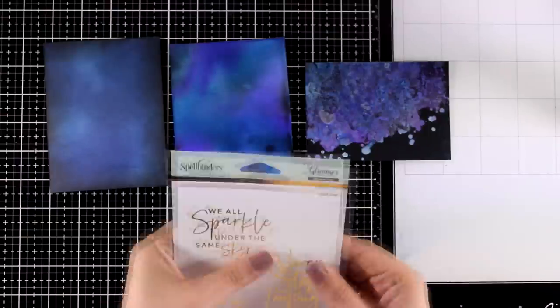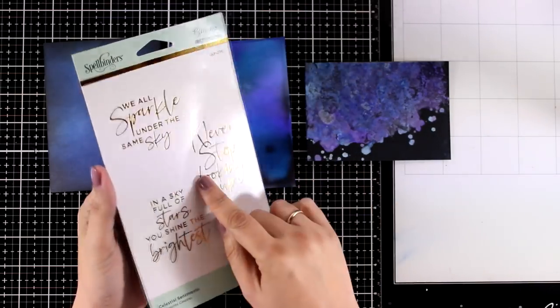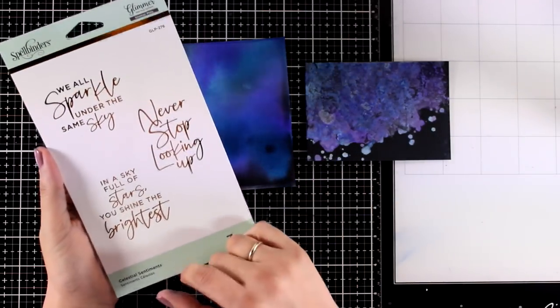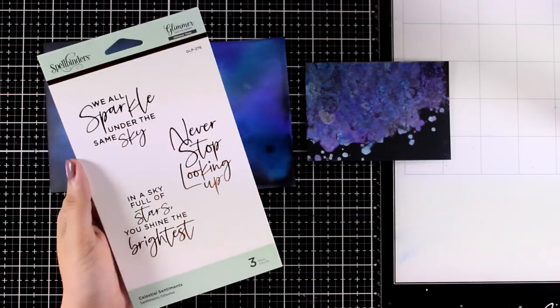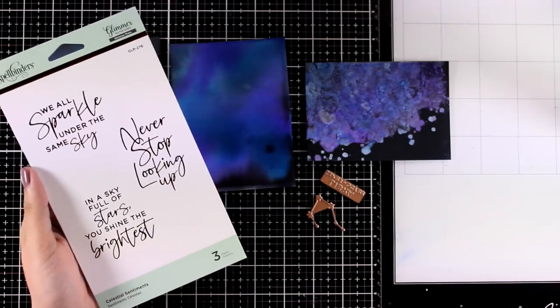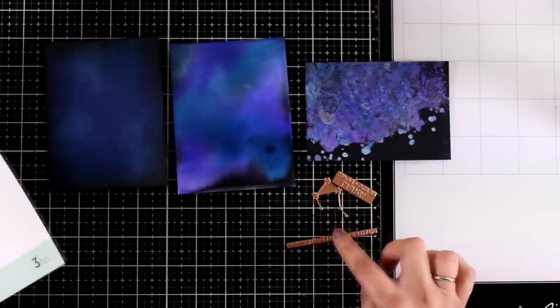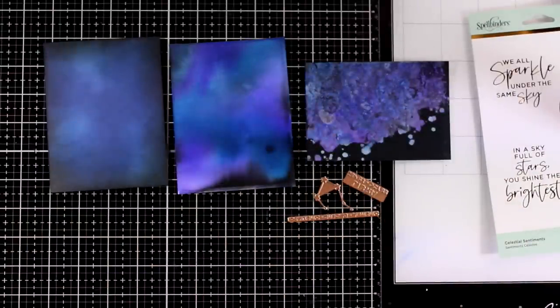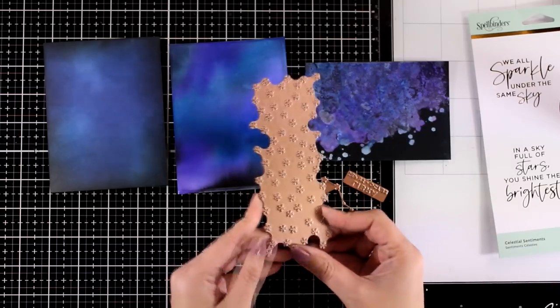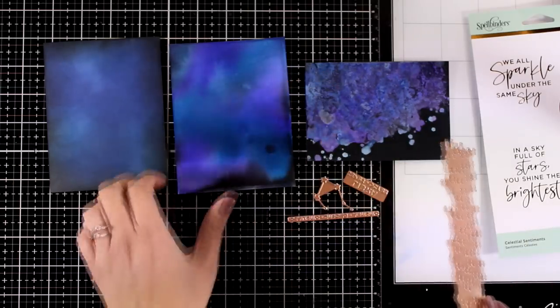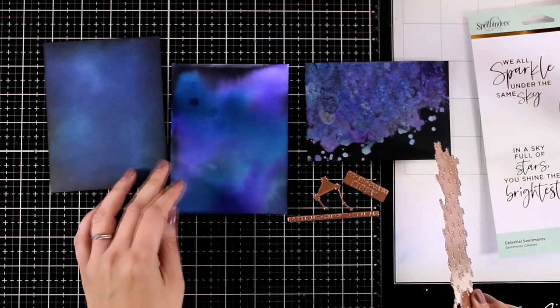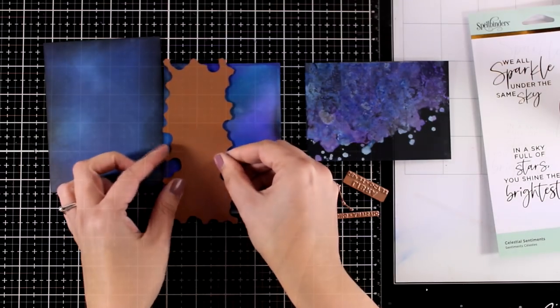Now for turning these backgrounds into cards I'm going to play with a new collection by Spellbinders which is called Celestial and it comes with lovely foiling plates that stamp great sentiments as well as they have a full collection of all the zodiac signs. I did get Libra since I am a Libra, and there are also backgrounds with stars and stuff like that, really pretty and that's what I will be showcasing today.